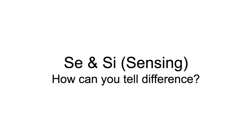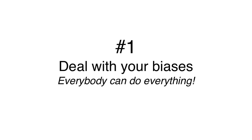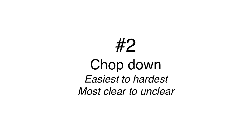So somebody comes at you and you've got to type them — is this SE or SI? And they're not like a lead SE or lead SI so it's not slappingly obvious. Here's kind of the checklist we go through. Number one, the most important thing is to deal with yourself: knowing that everybody can do everything, expecting everyone to do everything. The SE guy can SI, the SI guy can SE. You have to be emotionally ready for that, otherwise you're going to get locked into bias land, anecdote land. And then from there, it's chopping down from easiest to hardest, from the most clear, working your way down to unclear.